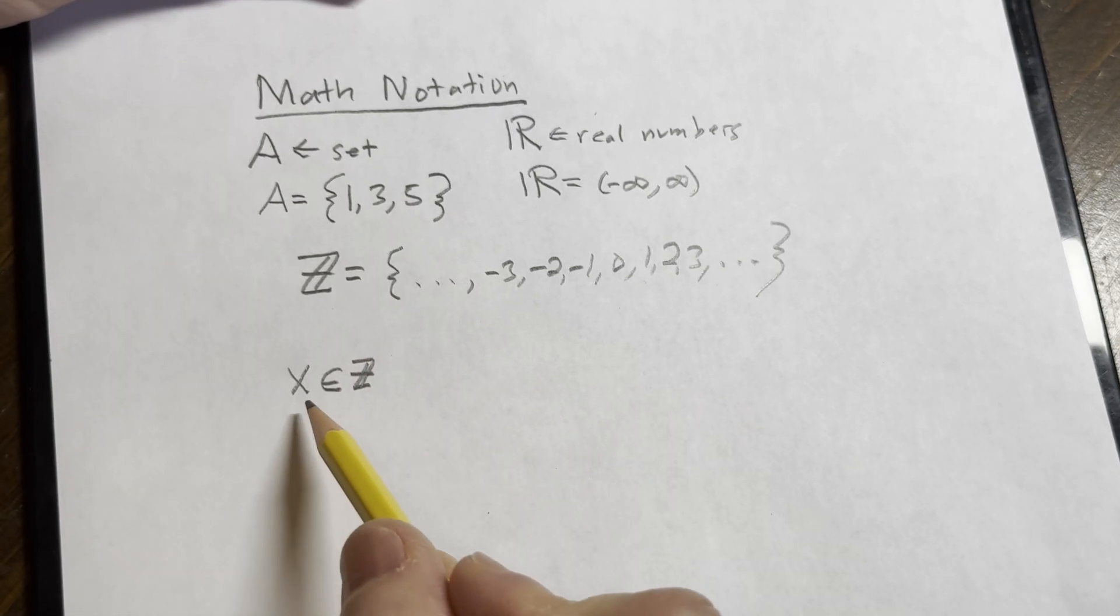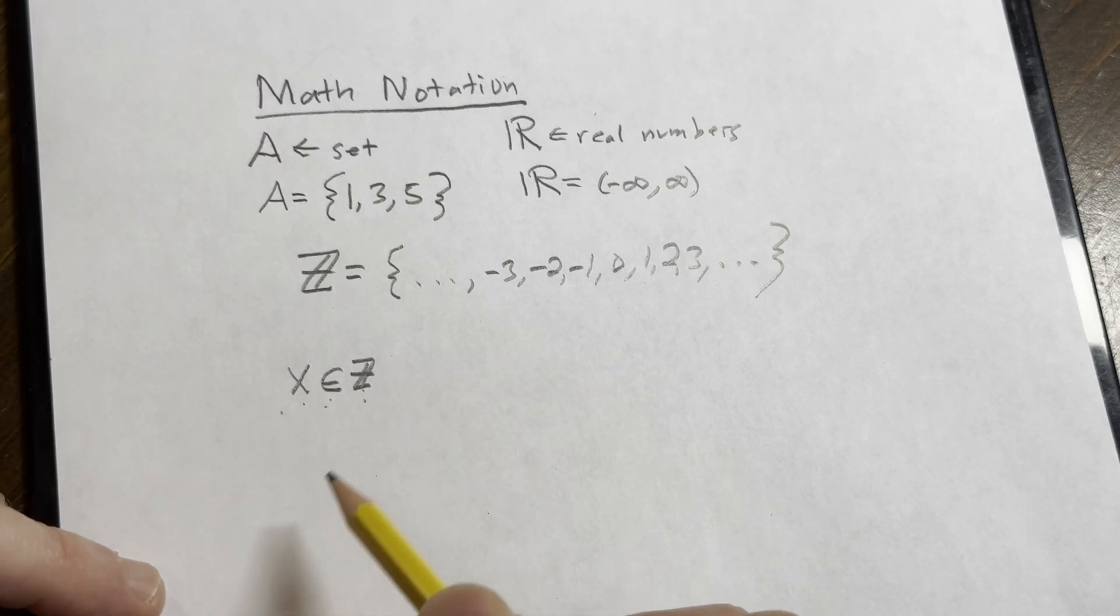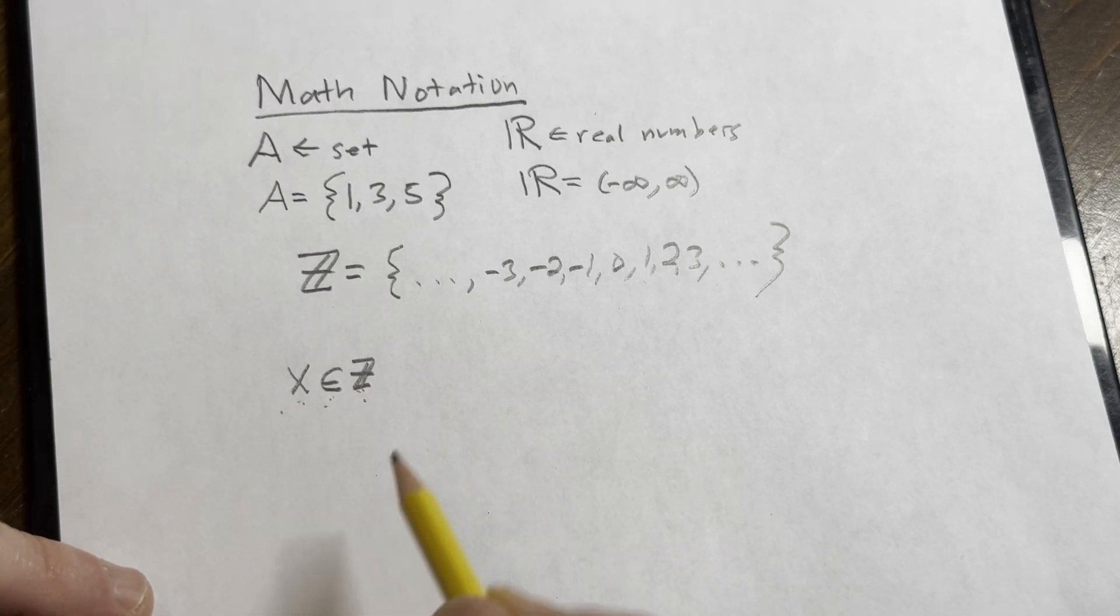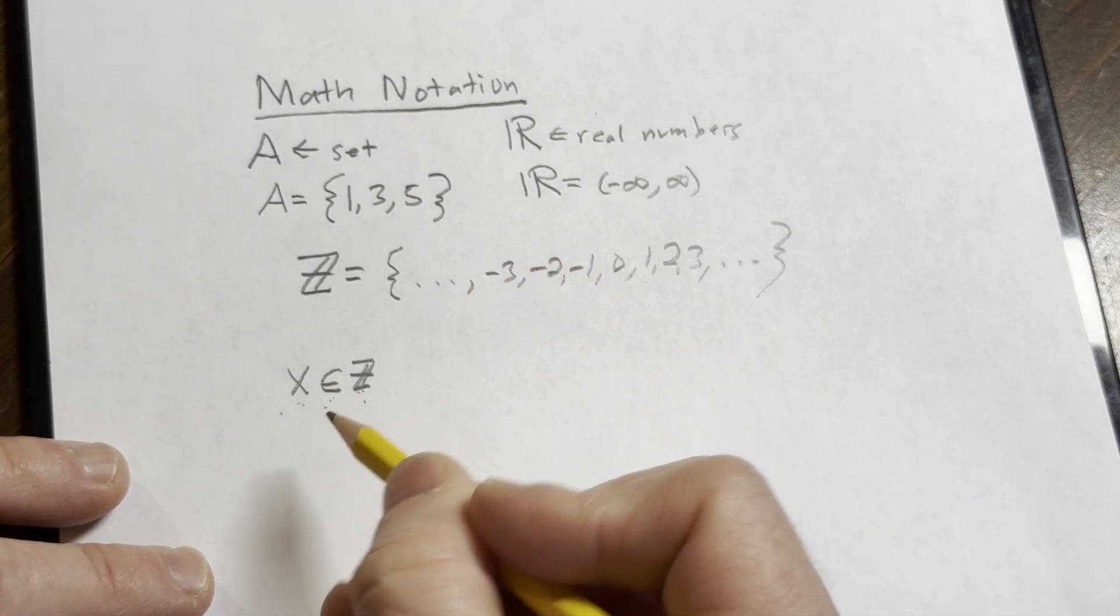if I say x is in the set of integers, that's what this means. X is in the set of integers. X is an element of the set of integers. It is a member of that set. That means x could be any of these numbers. Let's look at a concrete example.